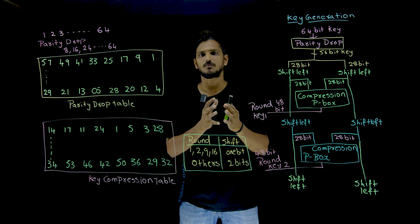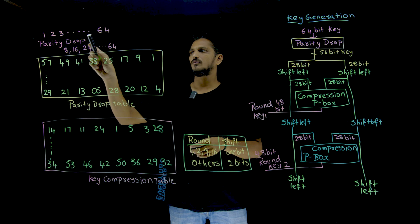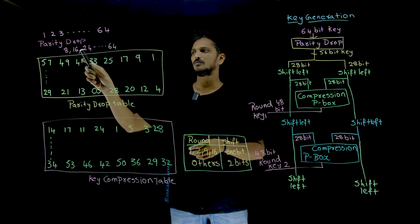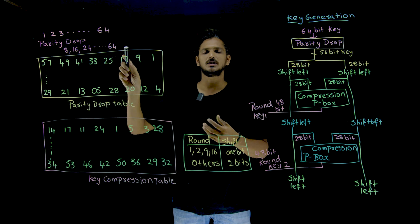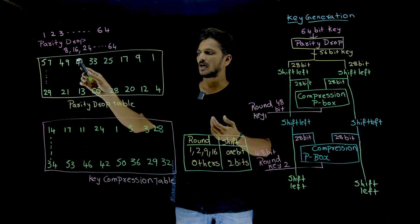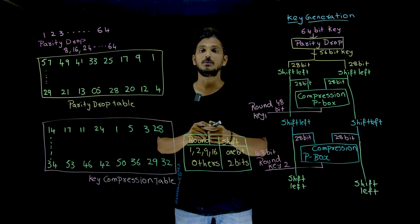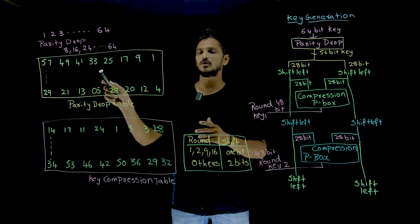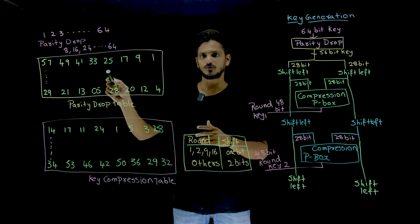What does parity drop mean? Take a 64-bit key — bits 1, 2, 3, 4 up to 64 bits. Parity drop means we remove the 8th bit, 16th bit, 24th bit, and so on up to the 64th bit. So we are going to eliminate 8 bits. The remaining bits go inside the permutation box. A p-box is used in order to shuffle the bits.